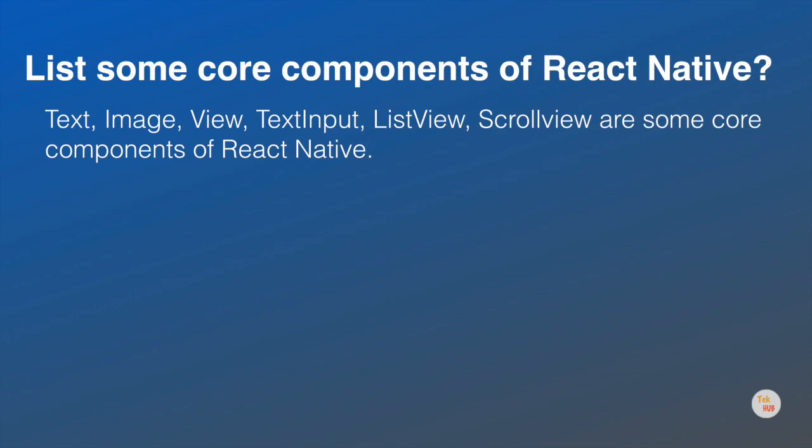Next question is: List some core components of React Native. Text, Image, View, TextInput, ListView, and ScrollView are some core components of React Native. React Native provides a number of built-in components. You will find a full list of components and APIs on the React Native official website. React Native has a community of thousands of developers. If you're looking for a library that does something specific, search the NPM registry for packages mentioning React Native.